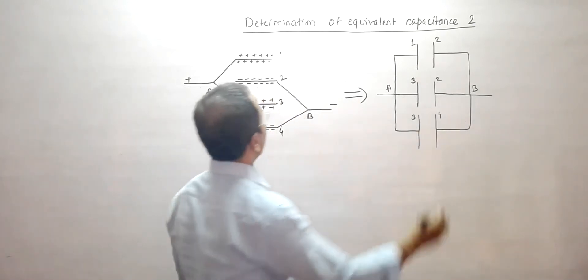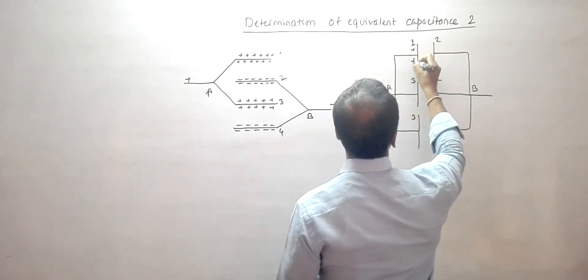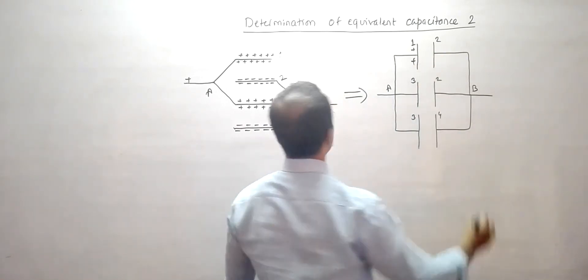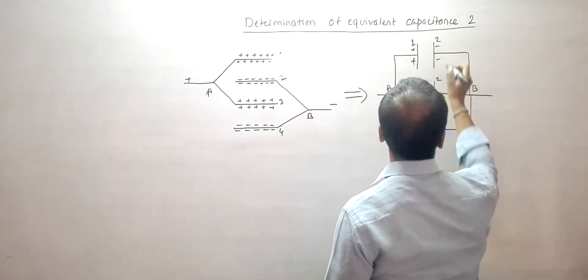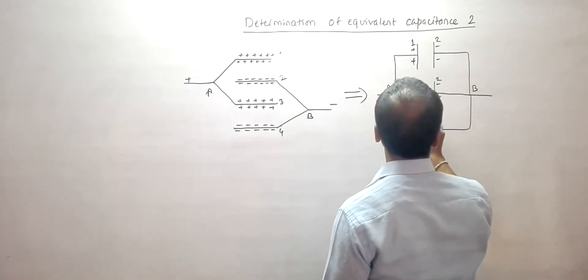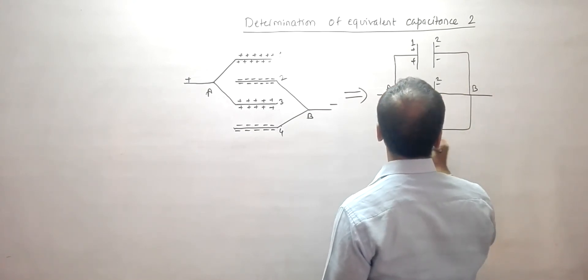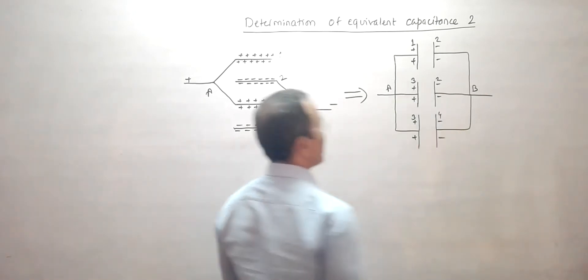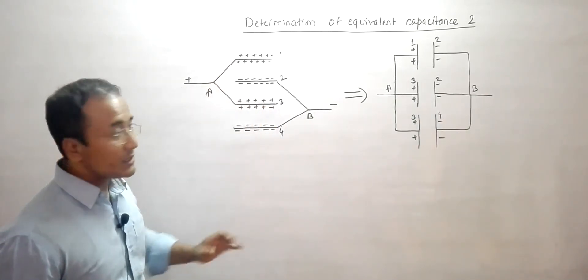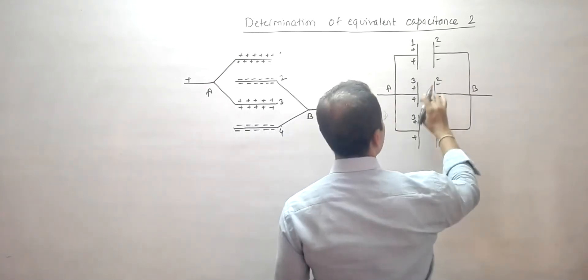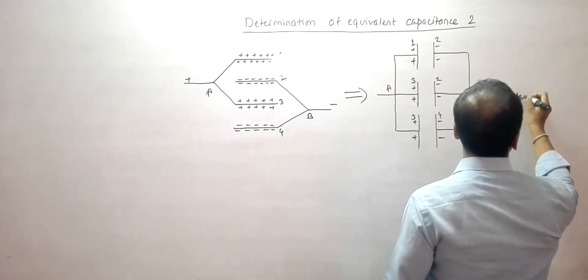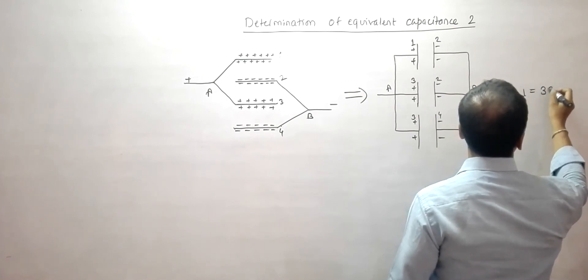The polarities are: plate 1 is fully positive, plate 2 is negative, plate 3 is positive, and plate 4 is negative. Each adjacent pair forms a capacitance C. So we have C, C, and C — three capacitors in parallel — giving C_total = 3C.